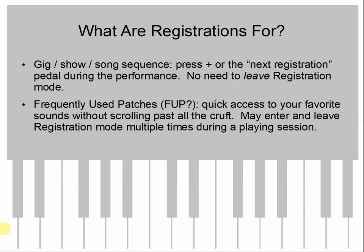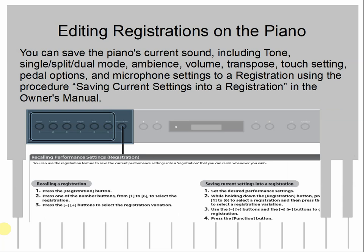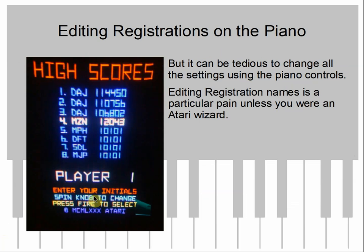Some of the weird stuff that happens when you leave registration mode is why I put this information together. You can save the piano's current sound — the tone, split/dual mode, ambience, volume, and a bunch of other settings — to a registration using the procedure described in the manual. Recalling a registration is pretty straightforward; press a few buttons. Saving it requires a press and hold, and worse, you have to enter the name using spin and go, which gets really tedious. There are also a bunch of controls that are kind of tedious to change.